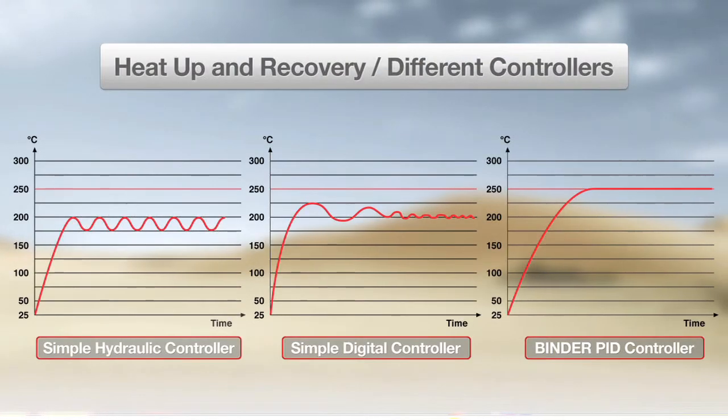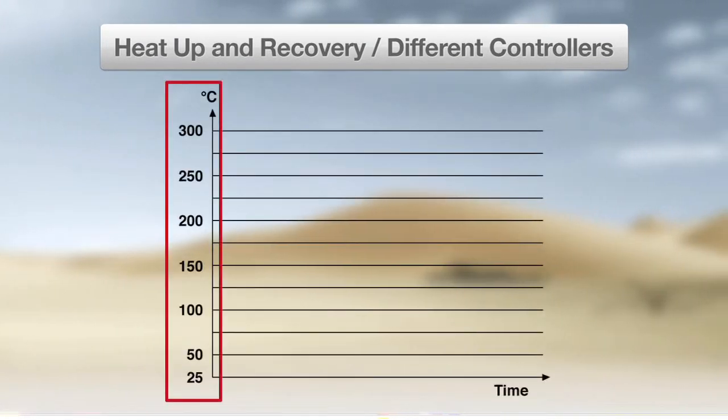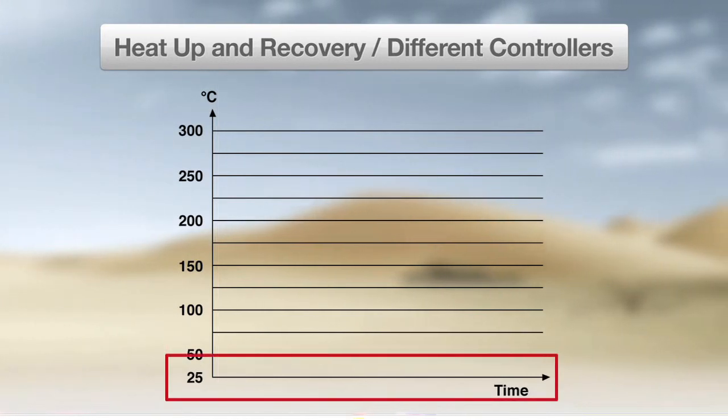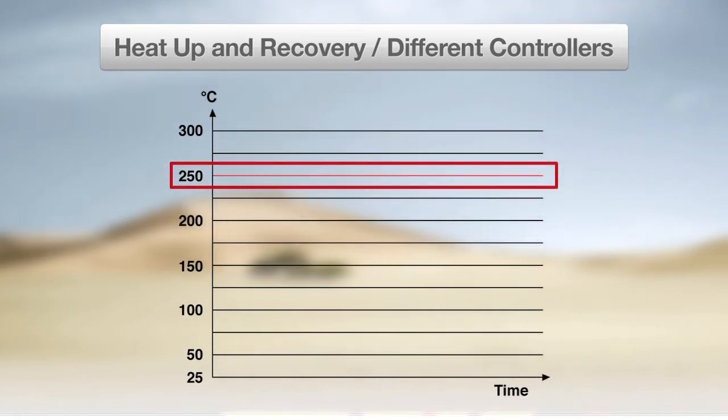Here you can see three graphs comparing heat-up and recovery of three different ovens. Temperature is shown on the Y-axis and time is shown on the X-axis. The set temperature point is 250 degrees Celsius as indicated by the straight, red horizontal line.